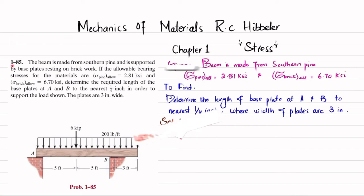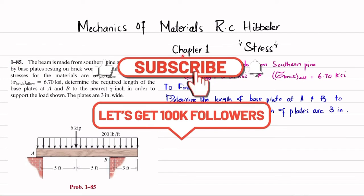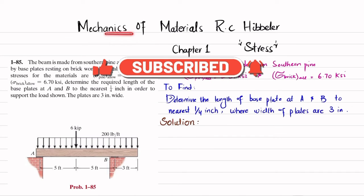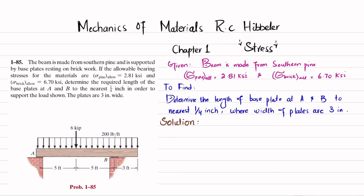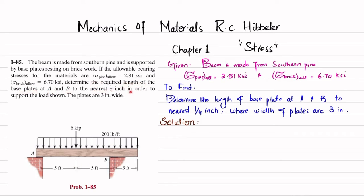Welcome back. In this video we are going to solve problem 1-85 taken from chapter number 1 on stress, from the book Mechanics of Materials by R.C. Hibbeler. The statement is: the beam is made from southern pine and is supported by base plates resting on the brickwork. The allowable bearing stress for pine is 2.81 ksi and for brick it is 6.70 ksi. Determine the required length of the base plates at A and B to the nearest 1/4 inch to support the load shown. The plates are 3 inches wide.